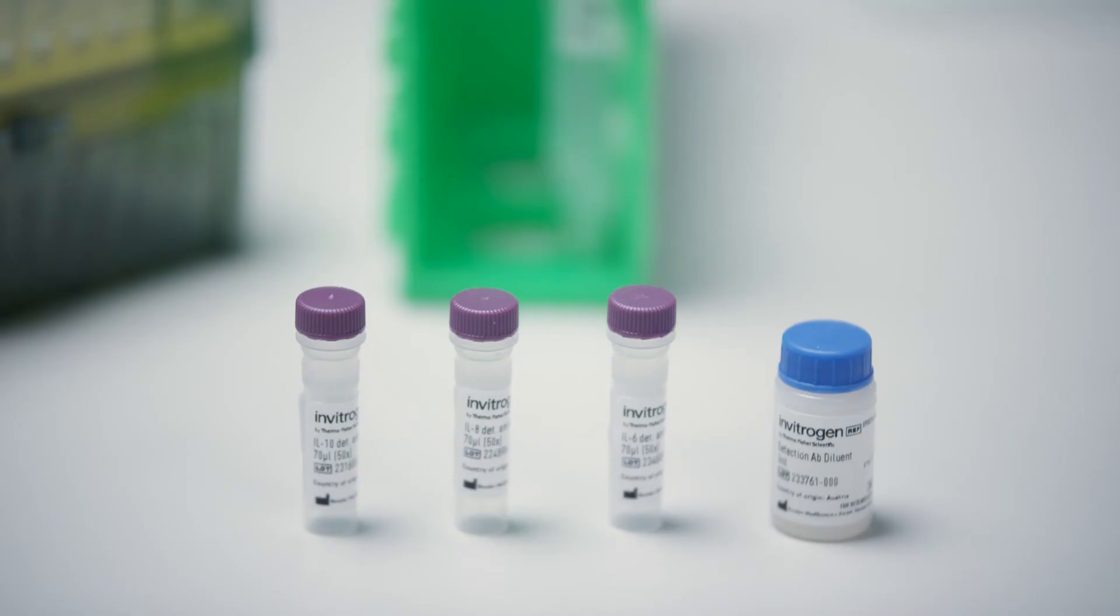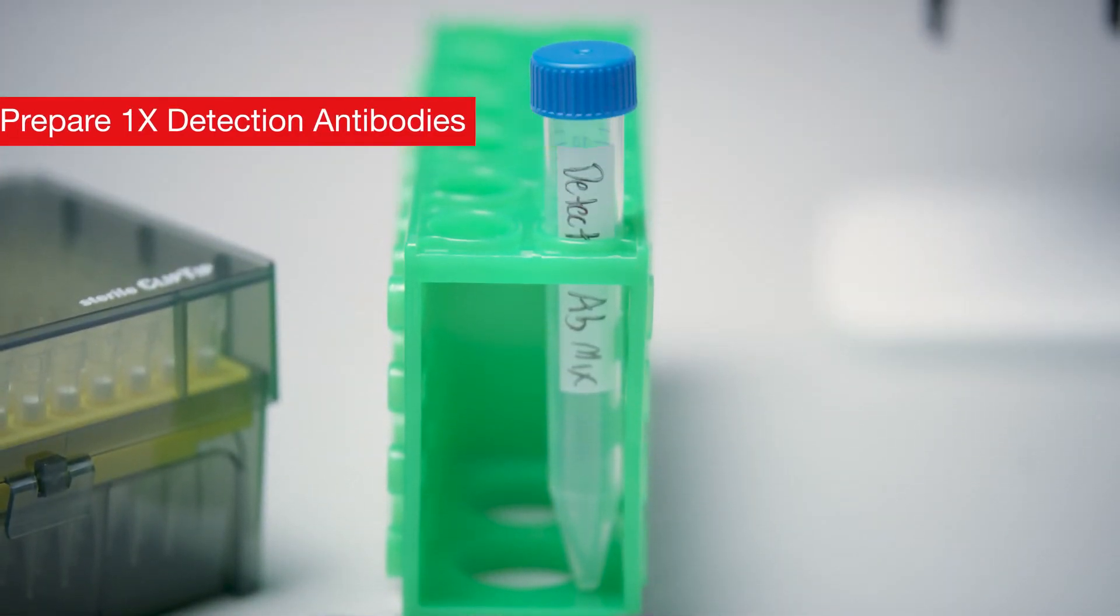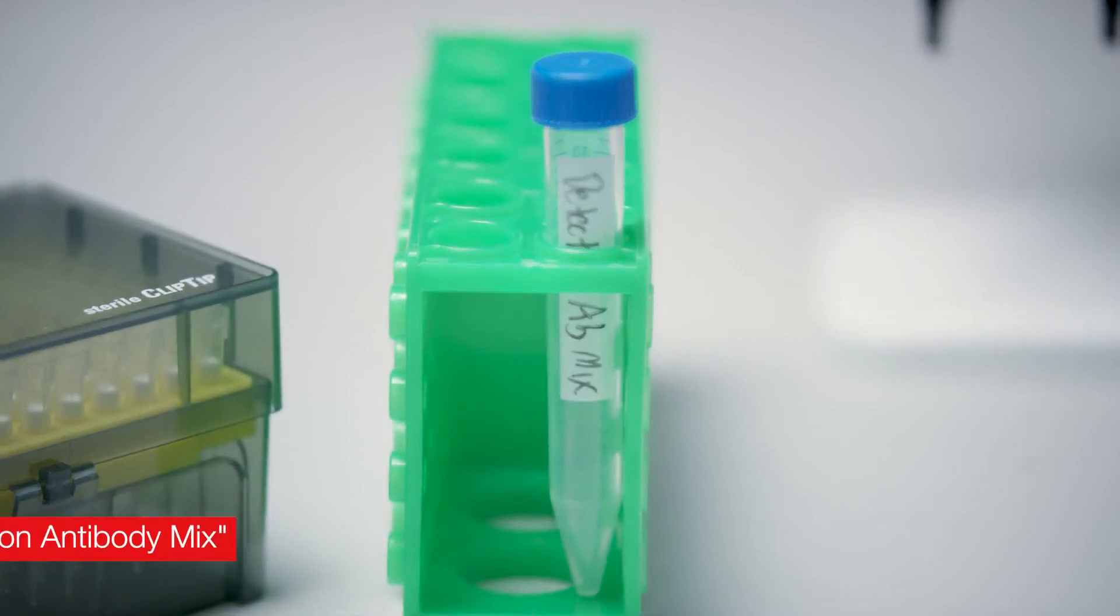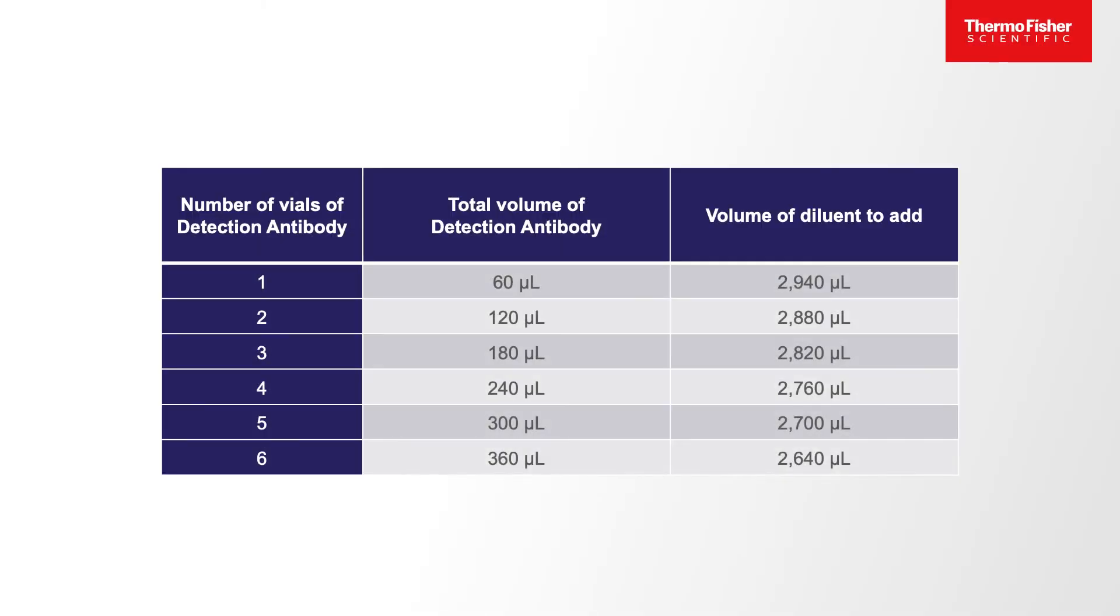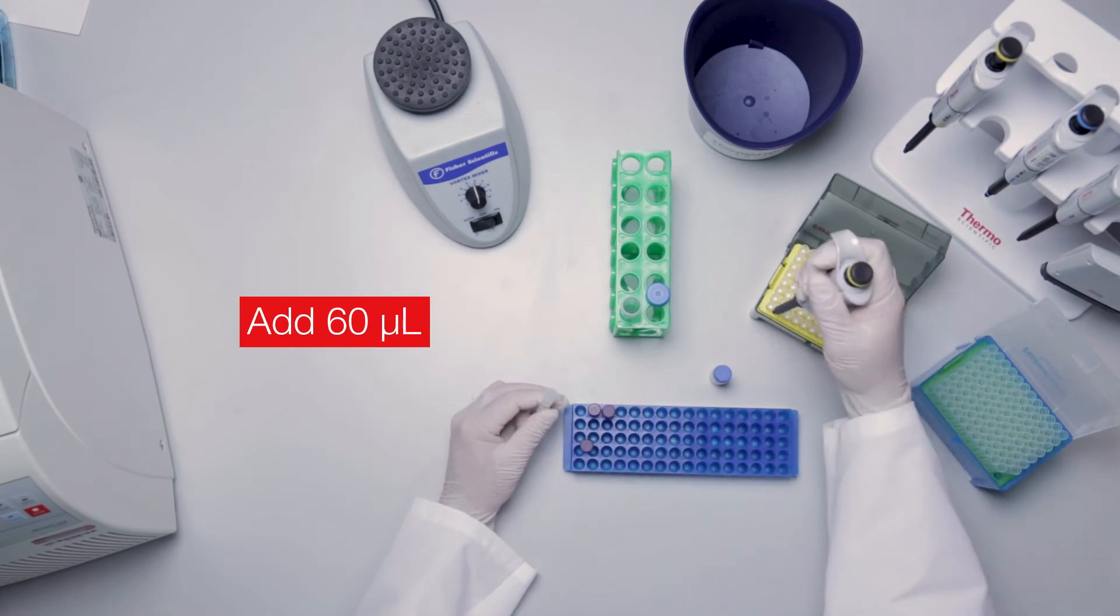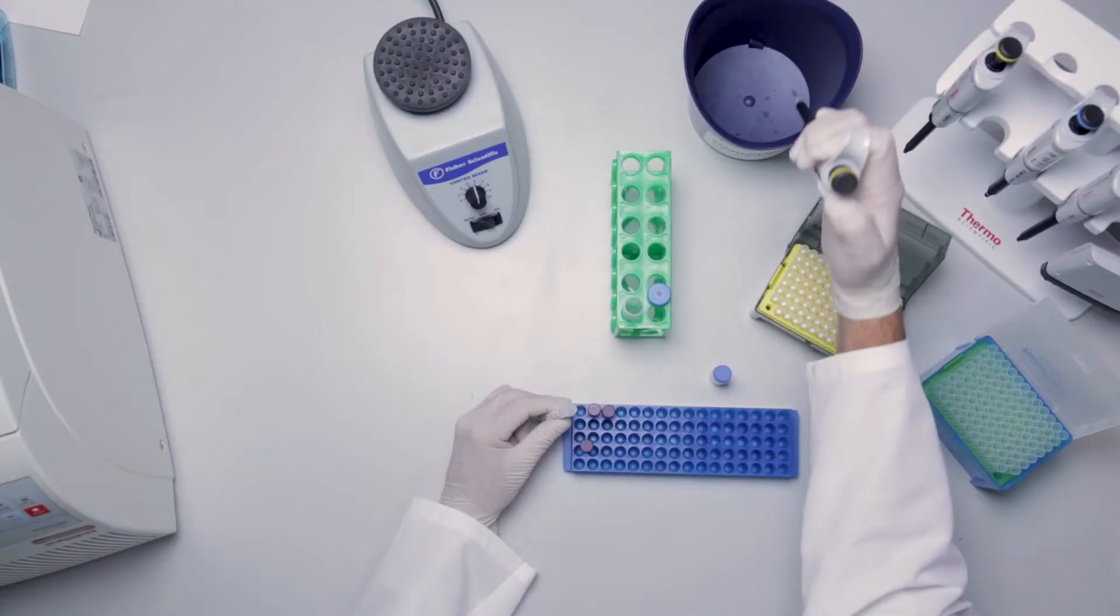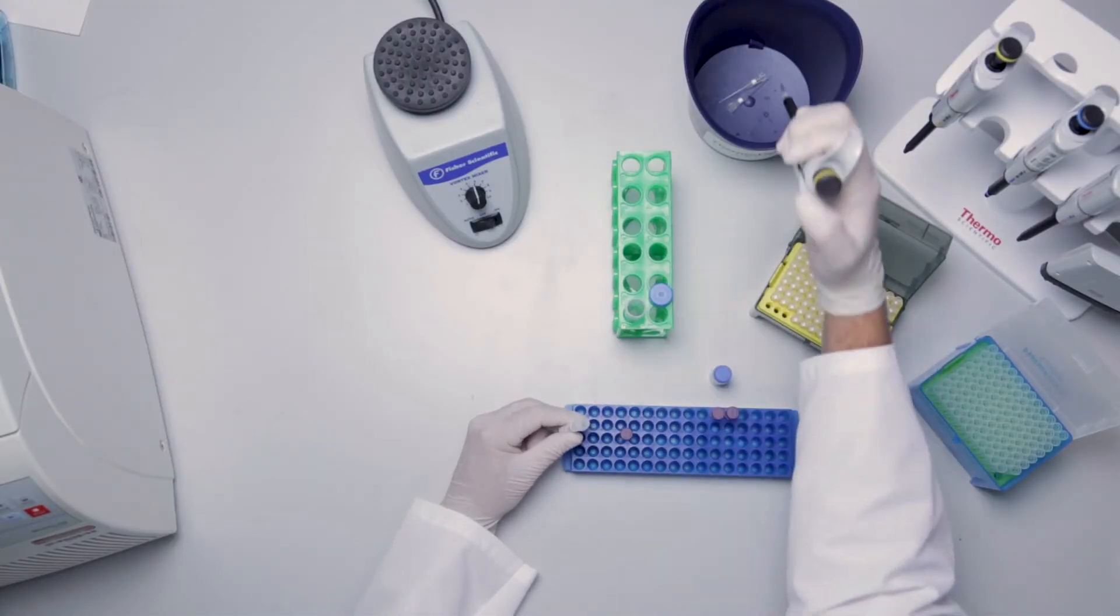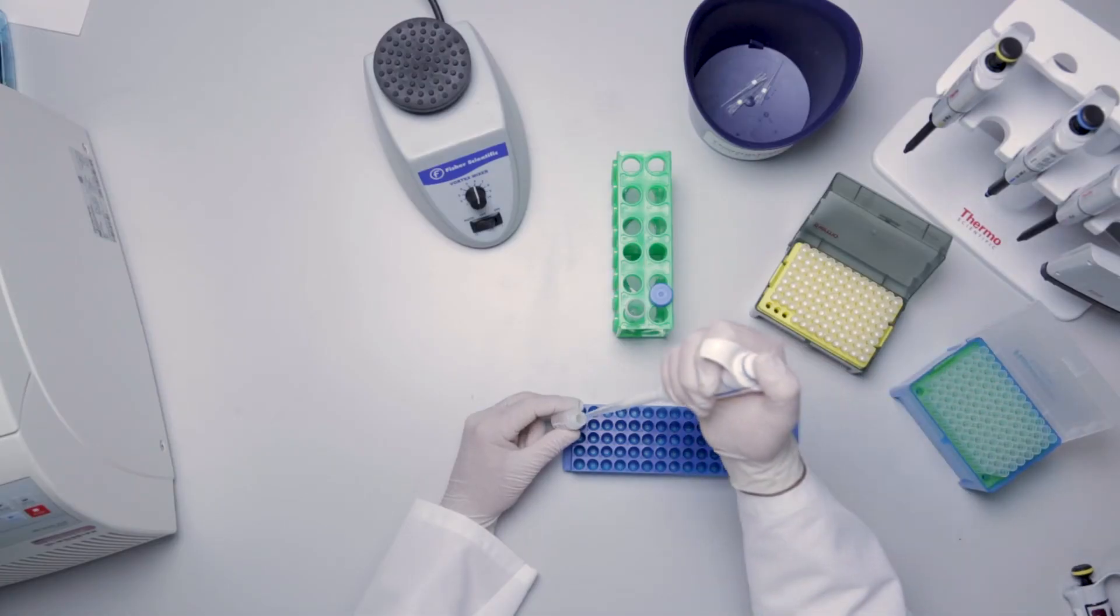The detection antibody in the combinable panels is provided at a 50x concentration. Label a 15 milliliter tube as detection antibody mix. Use the provided table in the manual to check the needed volumes for a full 96 well plate. Scale accordingly if using a partial plate. Add 60 microliters of each detection antibody concentrate to the labeled tube and bring the volume up to 3 milliliters using detection antibody diluent if using a full 96 well plate. Otherwise adjust the volume accordingly.